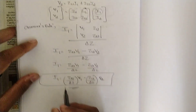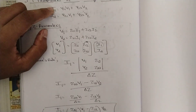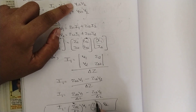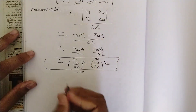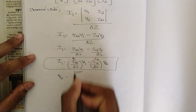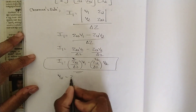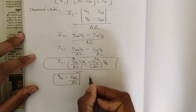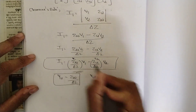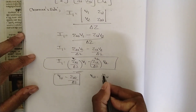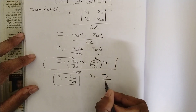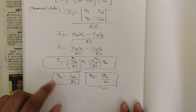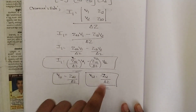Compare this with the first Y parameter equation: I1 = Y11·V1 + Y12·V2. So the value of Y11 in terms of Z parameters is Z22 / delta Z, and Y12 is equal to minus Z12 / delta Z. So two of the combinations are done — Y11 and Y12 are done.